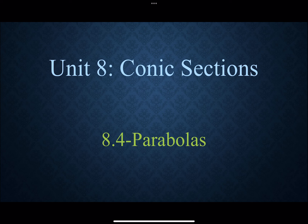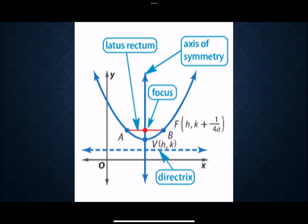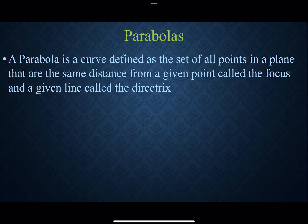Our last conic section to discuss is the parabola. This is a shape you have seen before in previous classes as a quadratic function, creating that U shape. There are a couple more technical things we'll talk about: the axis of symmetry, the vertex point, the focus, the directrix, and the latus rectum, which help create the overall shape. The technical definition of a parabola is the curve defined by the set of all points in a plane that are the same distance from a given point called the focus and a given line called the directrix.